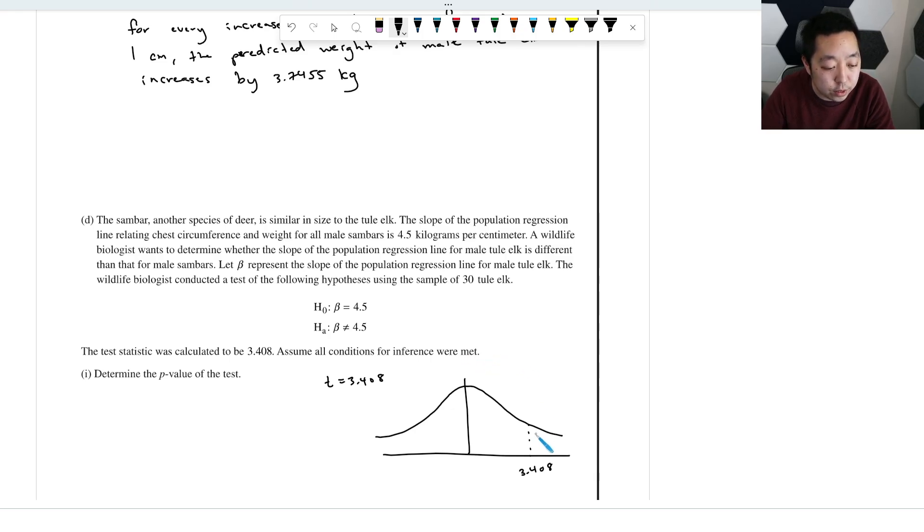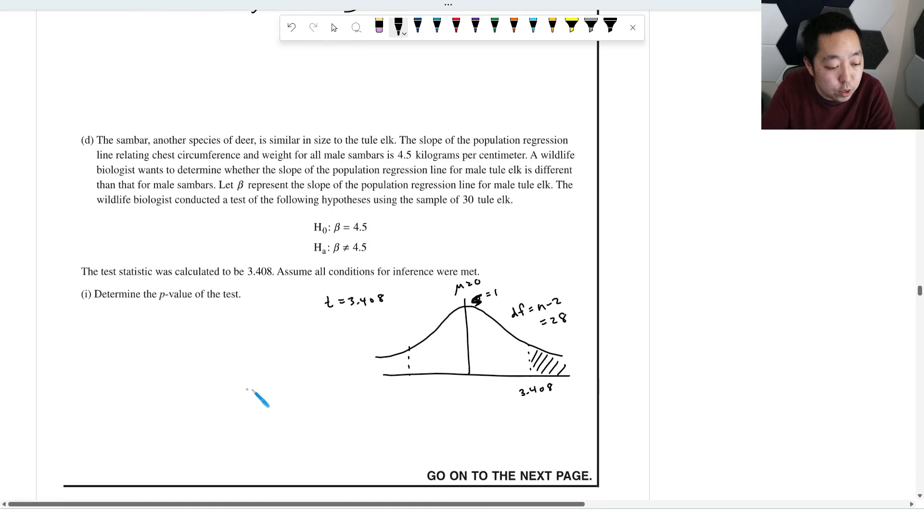So this is like a standardized, this is mean zero and standard deviation one where s is equal to one technically. Because when you have a test statistic, you've normalized it to a mean zero standard deviation one kind of curve. Now the degrees of freedom, you have to be careful, for when you're doing a beta test, degrees of freedom is N minus two. So it's actually 28 is the degrees of freedom.